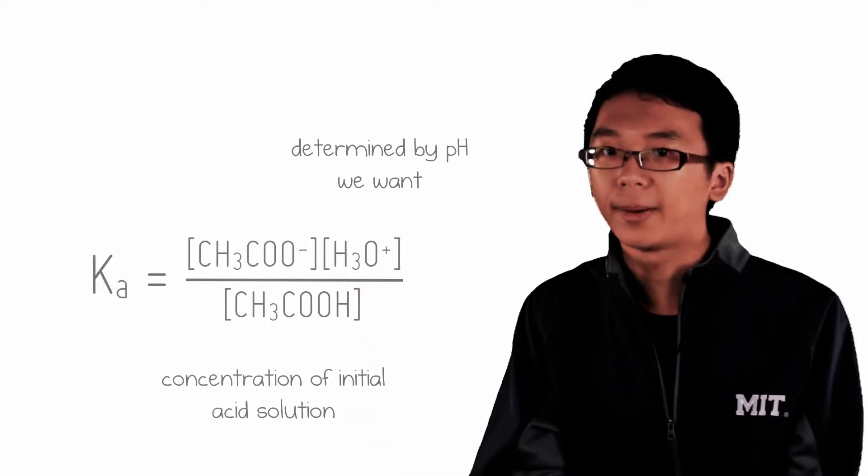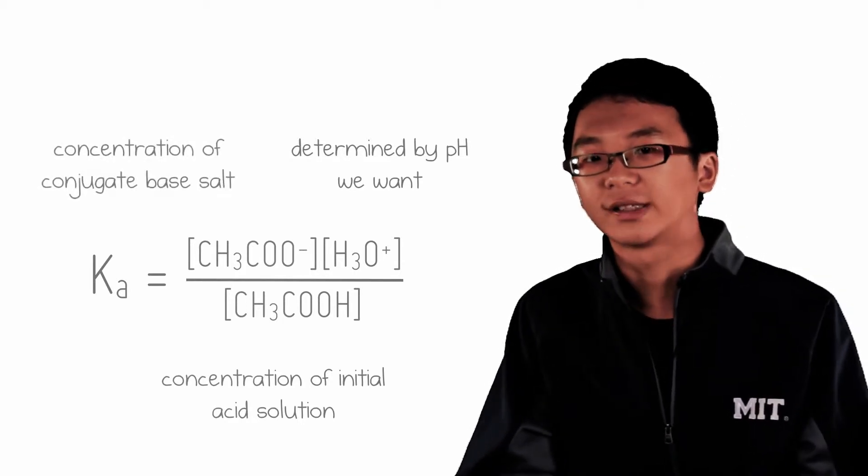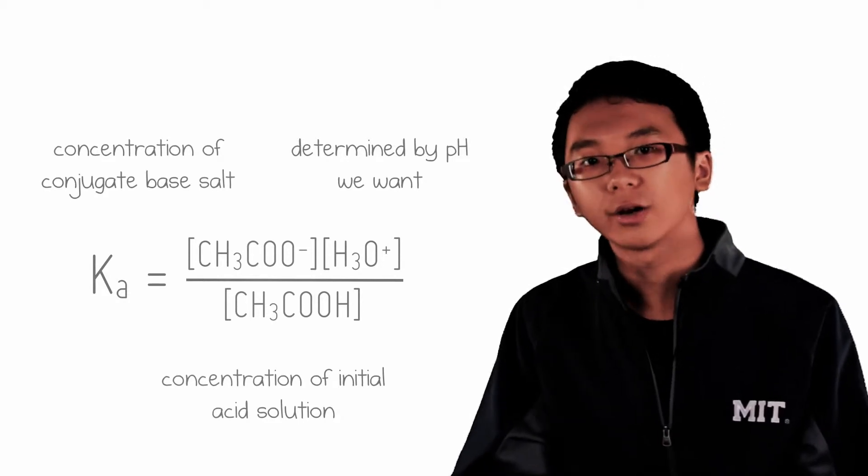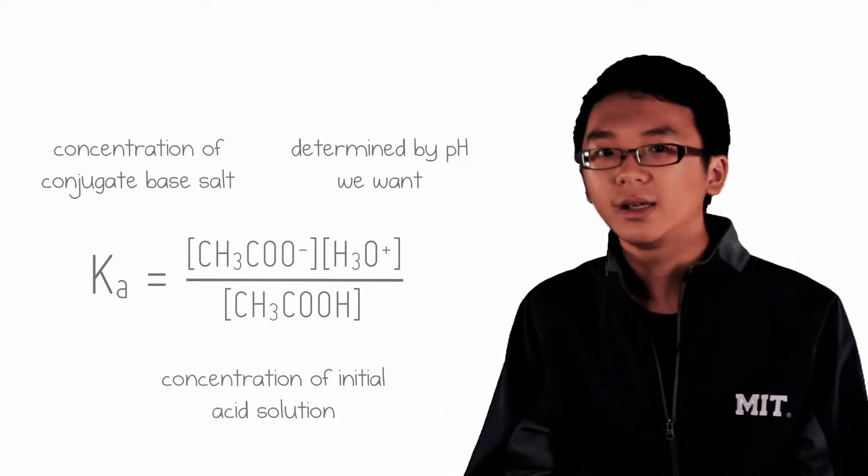The amount of conjugate base salt, sodium ethanoate for example, is the concentration of ethanoate ions at equilibrium. But hang on, doesn't ethanoic acid dissociate as well to form ethanoate? Yes,